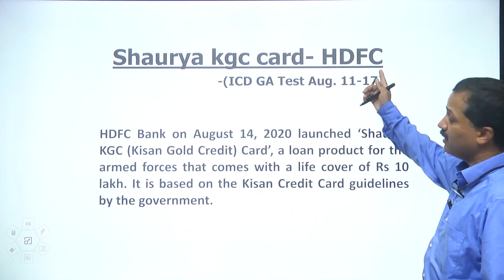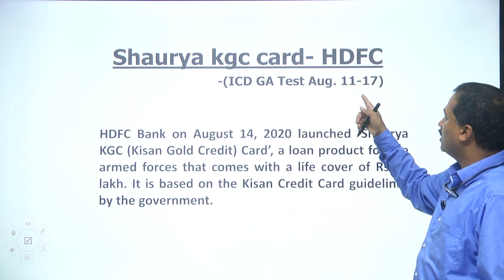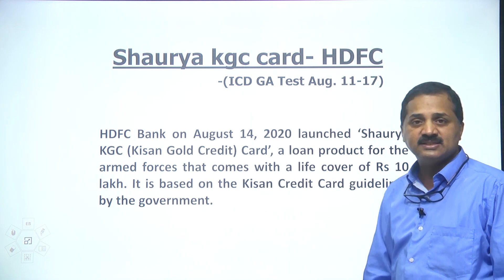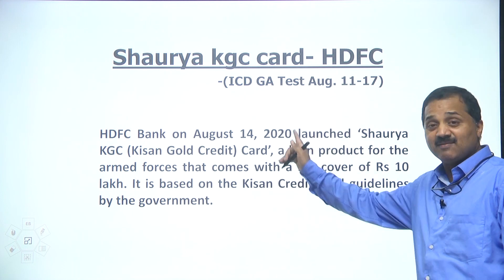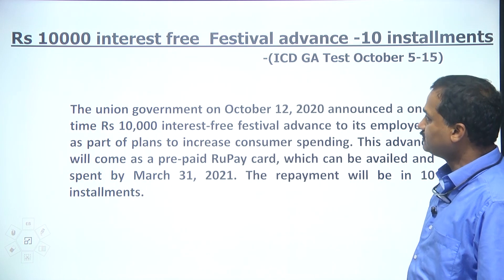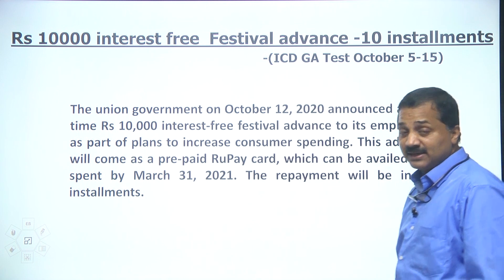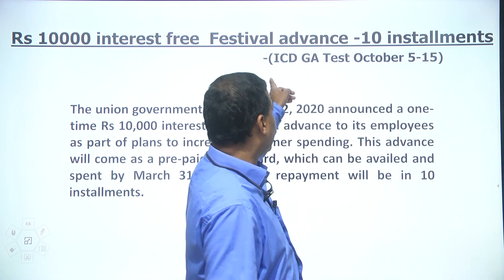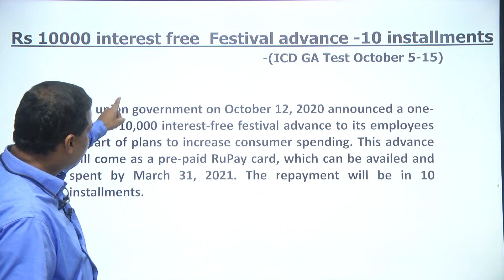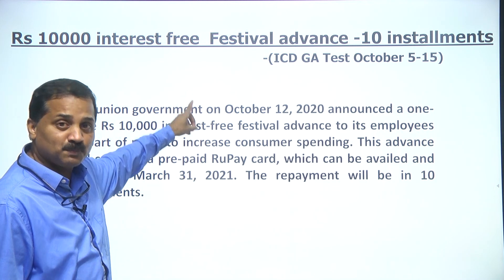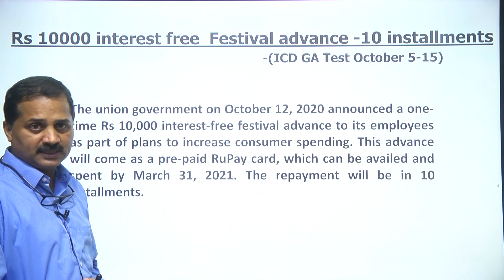Shaurya KGC card issued by HDFC — again from ICDG test August 11–17. Rupees 1,000 industry festival advance to be paid back in 10 installments — this was from ICDG test October 5–15. The explanatory note I gave underneath the question matches exactly what was asked.